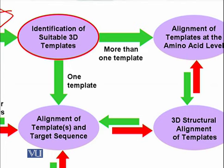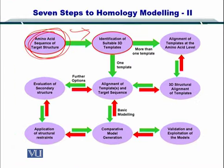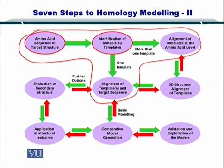If you have more than one template, you have to perform multiple sequence alignments. If you found one template, all you have to do is align the template and the target sequence. The first step of homology modeling encompasses these four sub-steps.